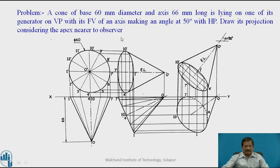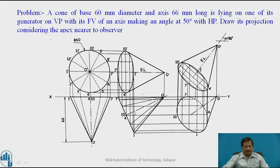The next condition is that one of its generators lies on VP. The generator O7 is the one on which the cone rests on VP. So tilt the triangle so that O7 lies on the XY line — that is, lying on VP. Draw O7 on the XY line and copy the same triangle around O7. So O7 is lying on VP and the triangle, which is the top view of the cone in the first stage, is completed. This is the second stage top view.